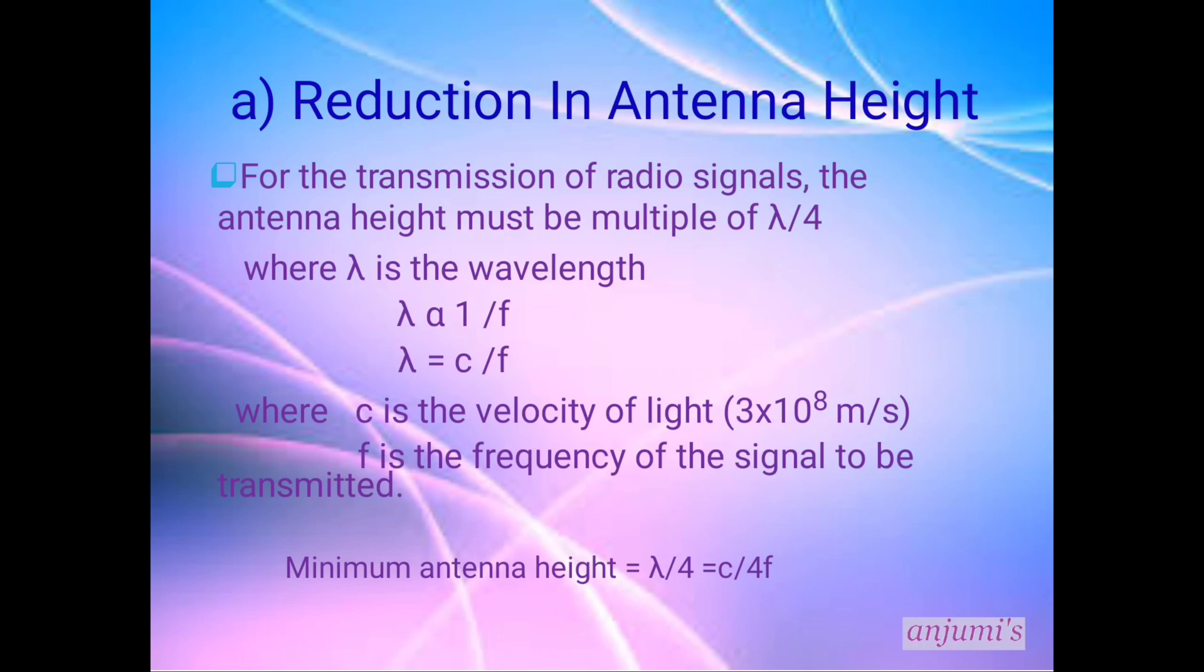λ can be written as λ = c/f, where c is the velocity of light, that is 3×10⁸ m/s. From this we can write minimum antenna height = λ/4 = c/4f.